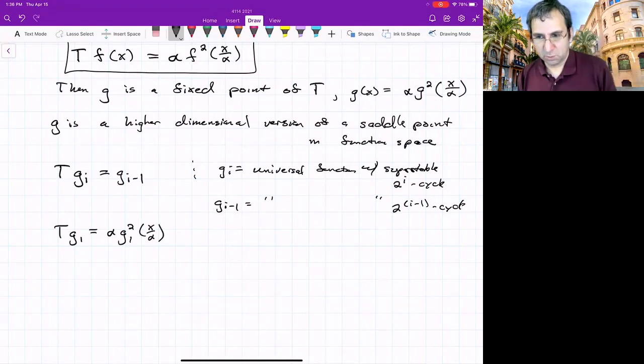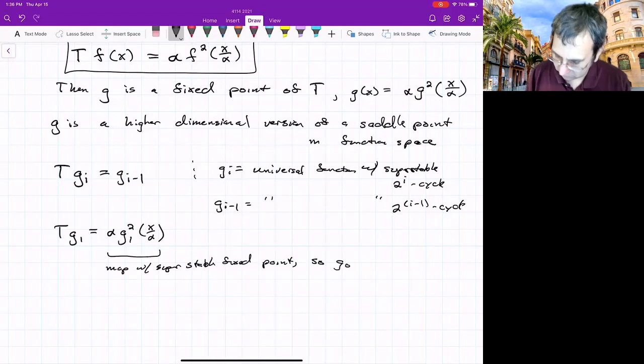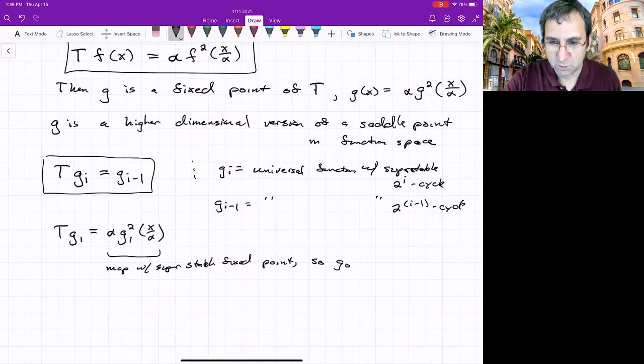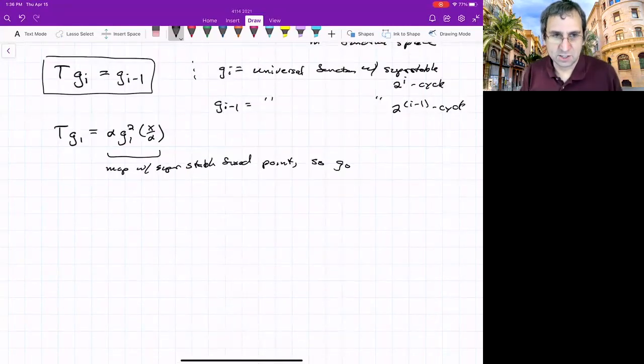Well, now we've created a fixed point of a map. This thing will be a map with a fixed point, super stable map with super stable fixed point, so g_0. But the same thing holds for all of them, and that's why we've got this. So this is how the operator T maps these universal functions one to another. I understand this is getting crazy. That's why it's just a sketch.